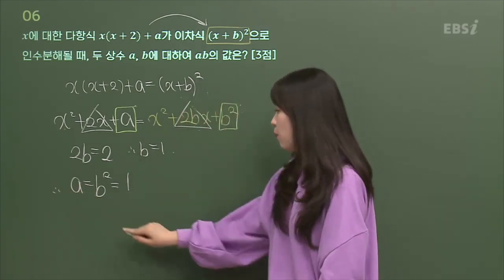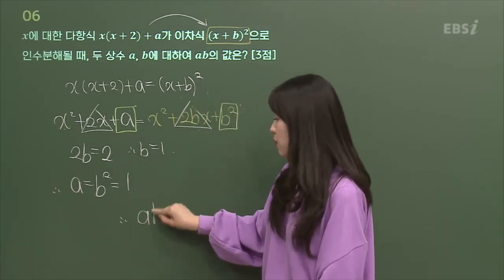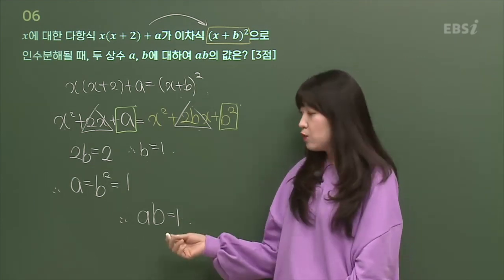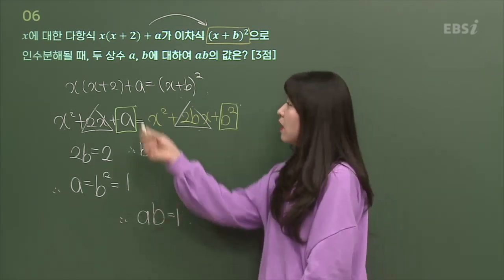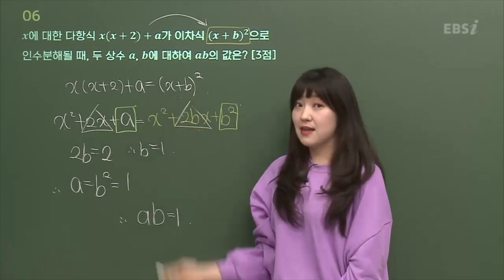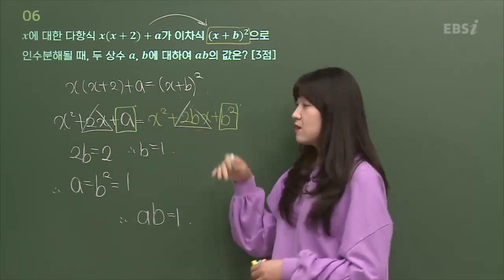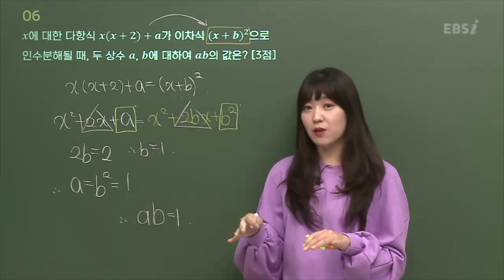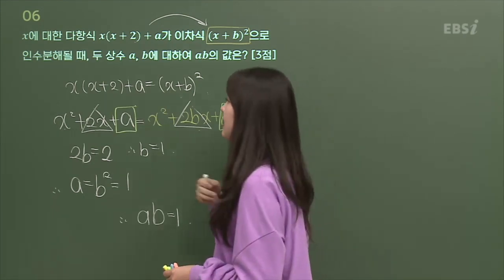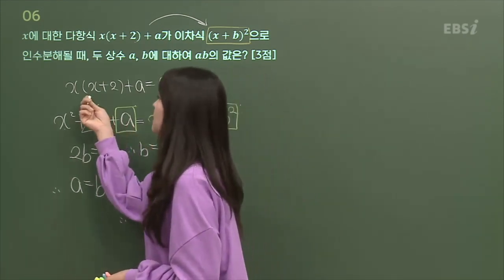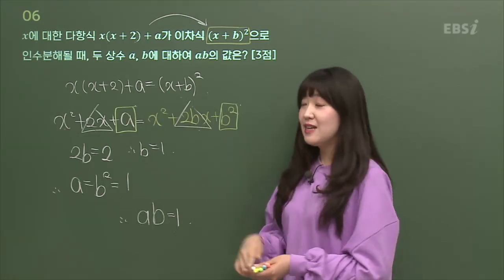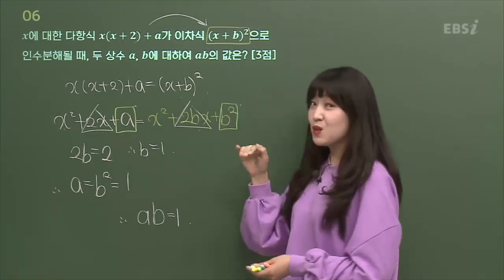문제에서 둘이 곱해달래. 나 1이랑 1이랑 곱했어. 값이 1이면 되겠다. 그래서 지금 나는 이거 어떻게 풀었냐면, 얘 인수분해한 게 이거라며. 그럼 둘이 그냥 같잖아. 그럼 둘이 같으니까 싹 전개해서 비교했어. 아니면 얘랑 얘랑 같으니까 얘를 가지고 진짜 인수분해한 게 완전제곱식이 되어줘도 괜찮지. 그렇게 풀었어도 괜찮아.